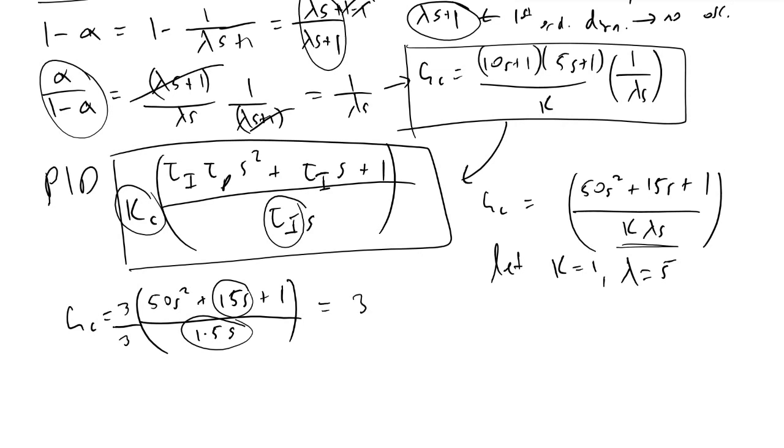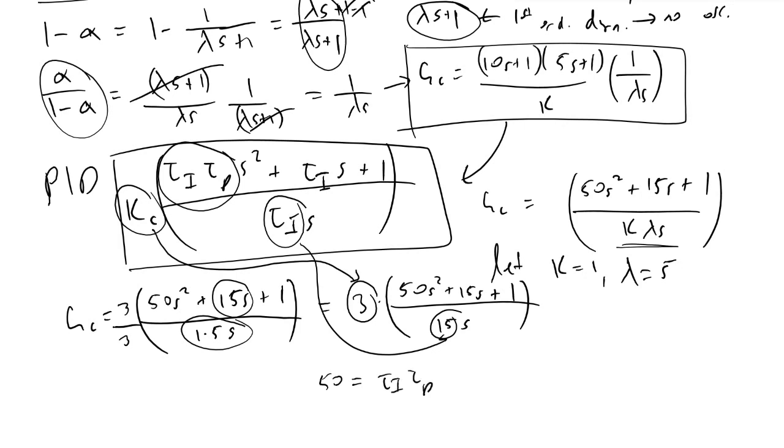And so when we do that, we'll have 3 times 50s squared plus 15s plus 1 over 15s. And the cool thing now is that we can recognize that kc should be 3. We also see that tau i should be 15. And if we look at this part here, we'll see that 50 is equal to tau i tau d. We know that tau i was equal to 15, therefore tau d must be equal to 50 over 15.